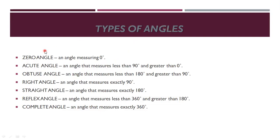Next is types of angles. Zero angle: an angle measuring zero degrees. Acute angle: an angle that measures less than 90 degrees and greater than zero degrees — so between zero and 90 degrees. Obtuse angle: an angle that measures less than 180 degrees and greater than 90 degrees, so between 90 and 180 degrees.